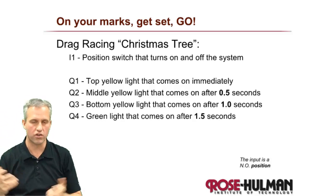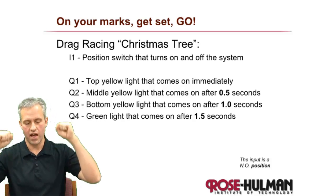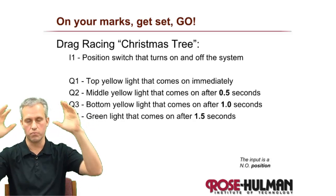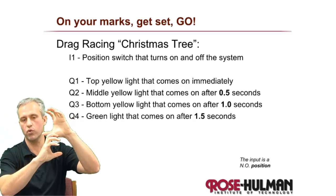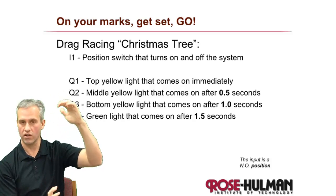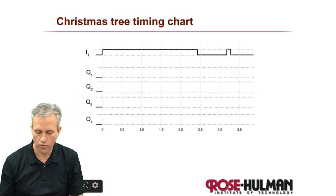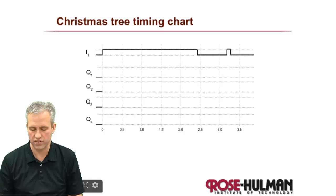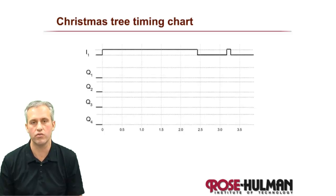For the specifics: I1 turns the Christmas tree on. The top yellow comes on instantly. Then there's a half-second delay until two are on, another half second until three are on, and another half second until all four are on — outputs Q1 through Q4. Before playing with it, see if you can complete the timing chart in your notes on your own.